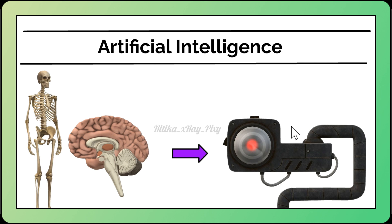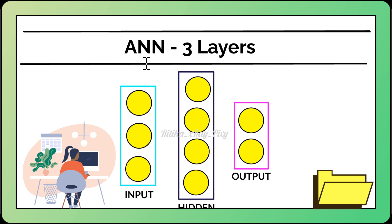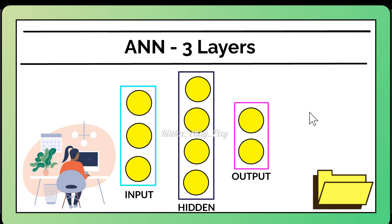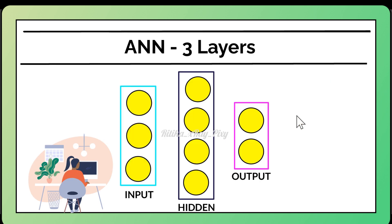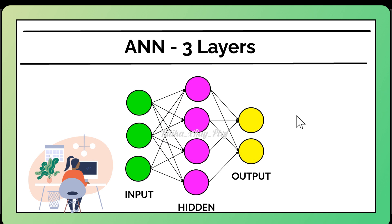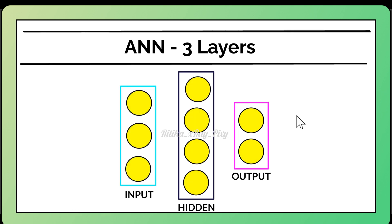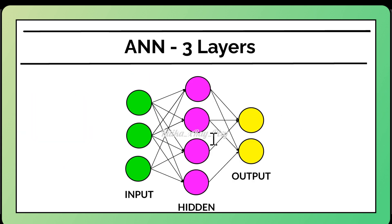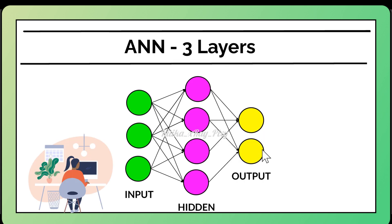We have different key concepts in deep learning. First, we have artificial neural networks inspired by the working of the human brain. These consist of neurons (nodes) connected by edges. Artificial neural networks are structured in layers with three important layers: an input layer, a hidden layer, and an output layer. The input layer receives input data, the hidden layer processes it, and the output layer provides the final output.